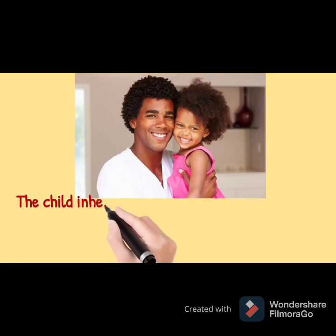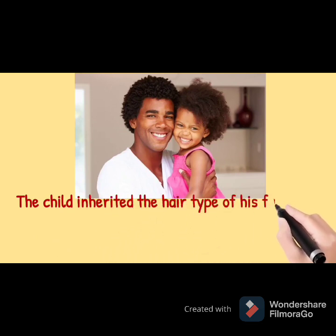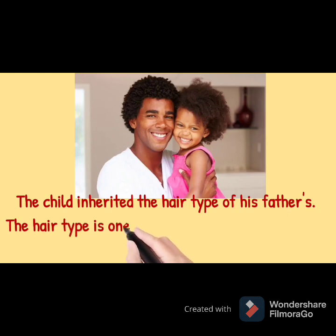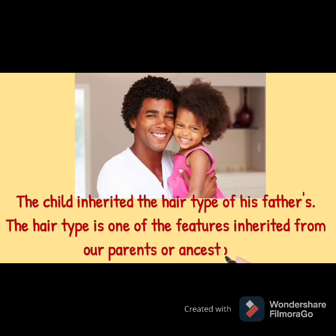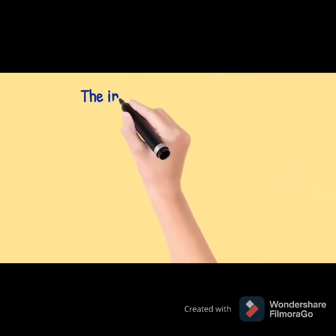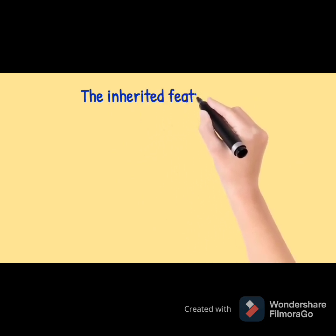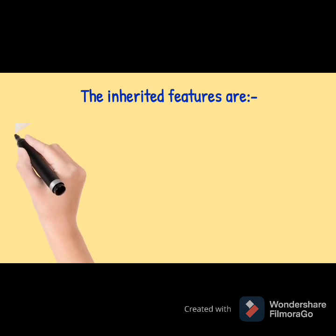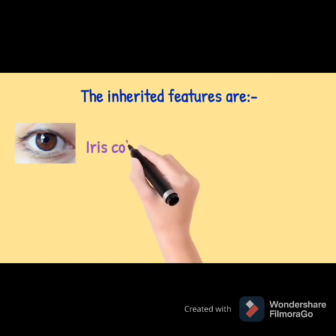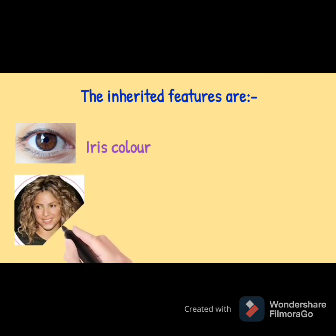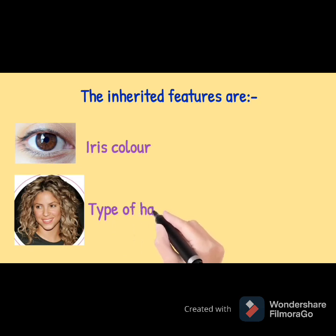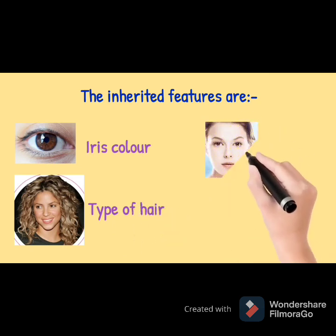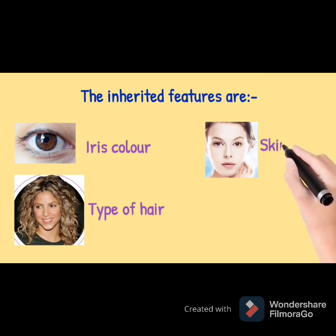The child inherits the hair type of their father's. Hair type is one of the features inherited from our parents or ancestors. Other inherited features include iris color, skin color, and body type or height.